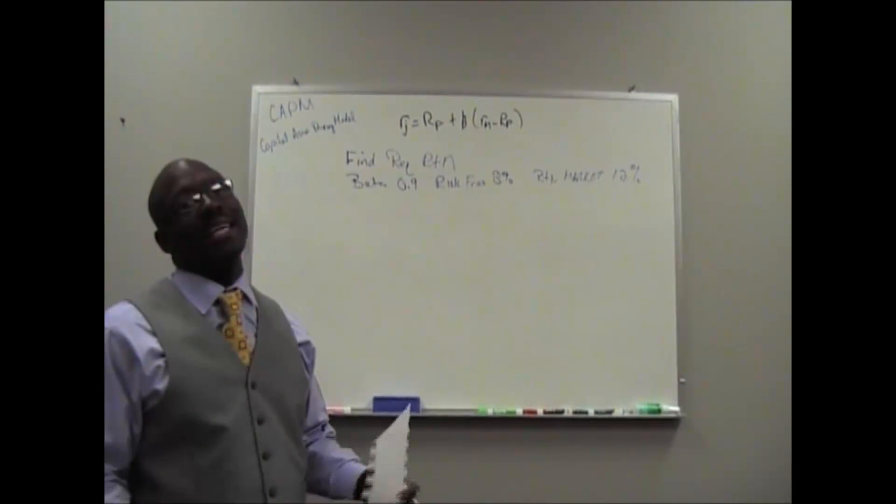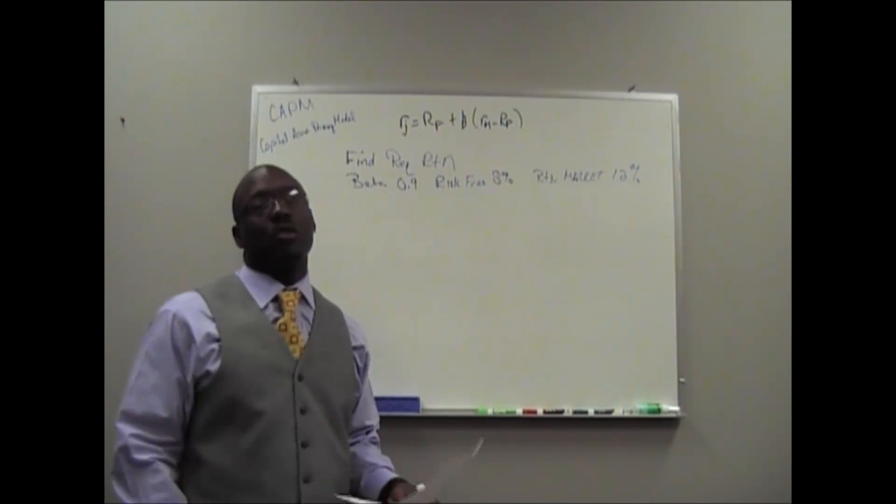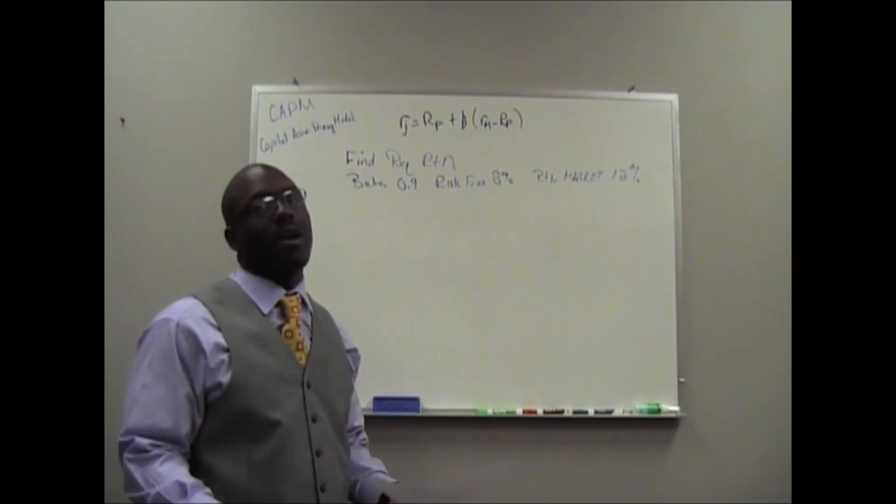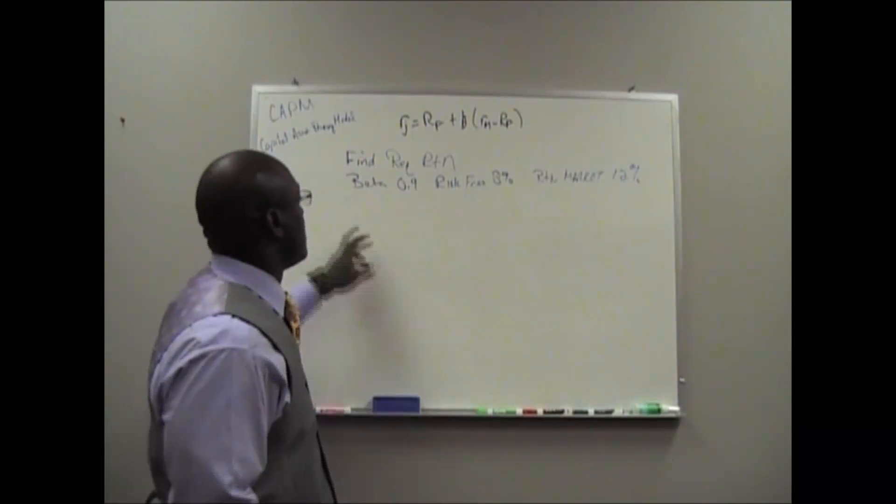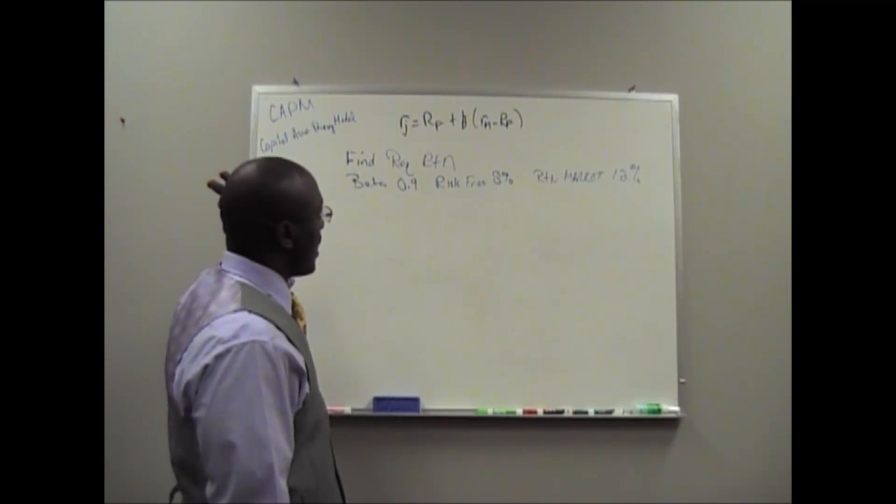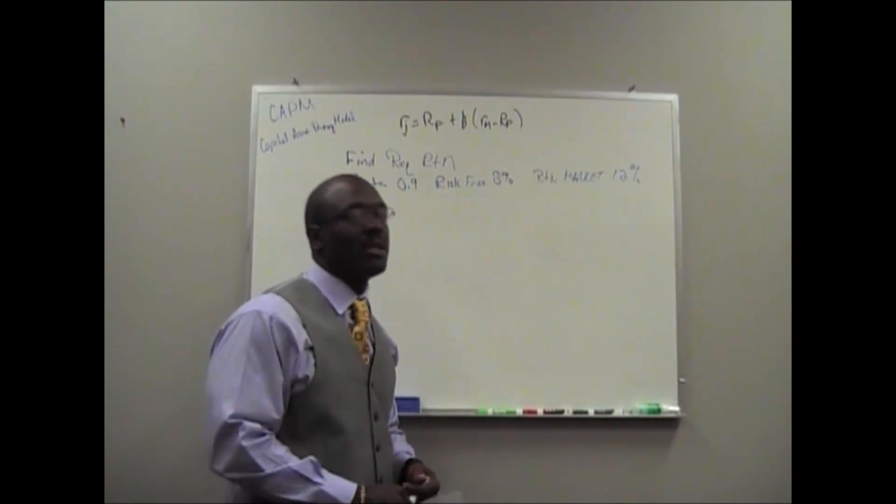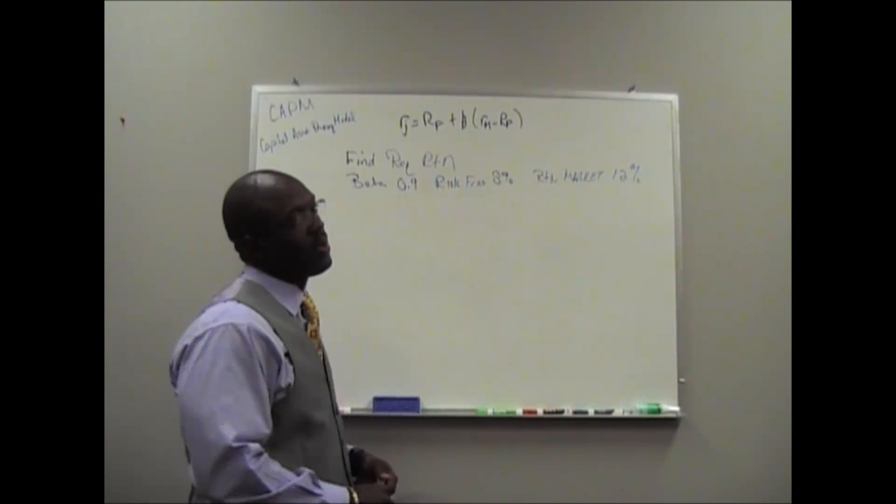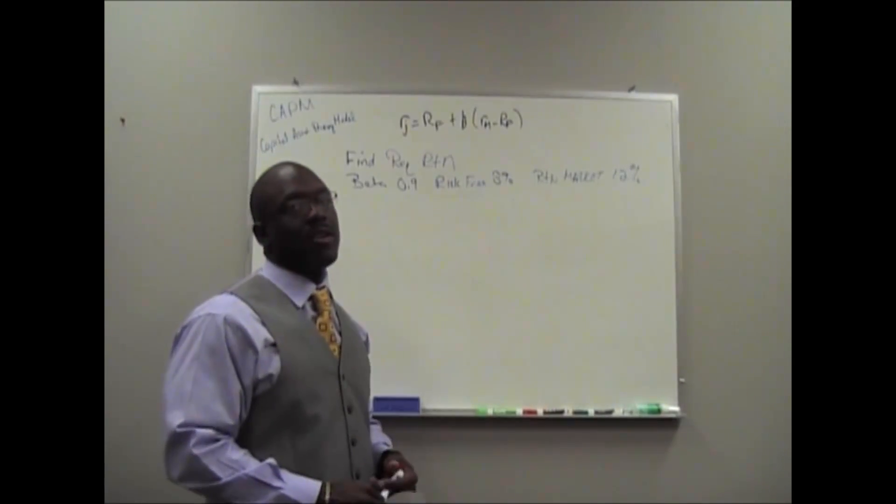The first problem we're going to work is a classic CAPM problem. We're actually trying to find the required return. This is the information that we have. We have the formula at the top: the return of J equals the risk-free rate plus the beta, and in parentheses you have the return on the market minus the risk-free rate.